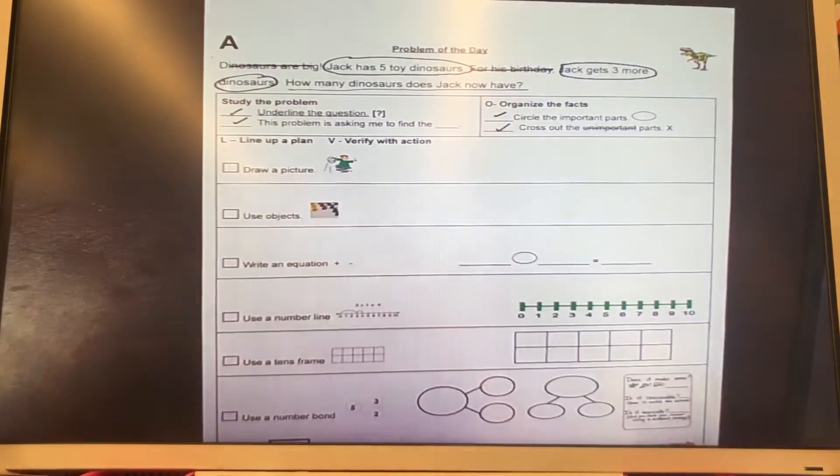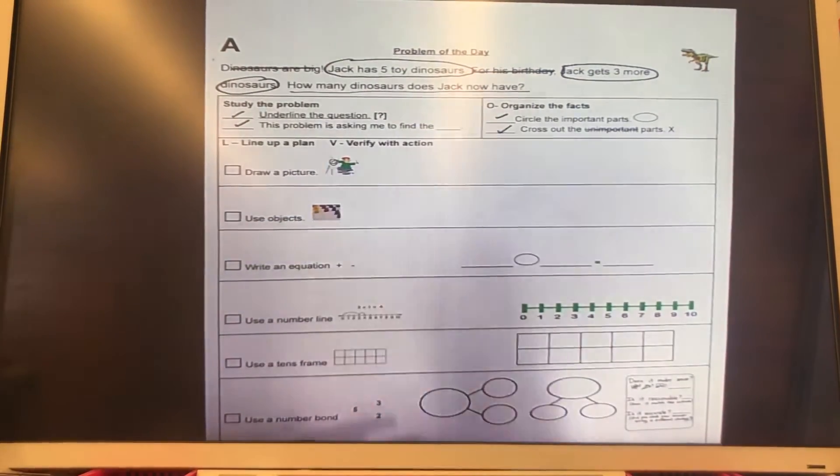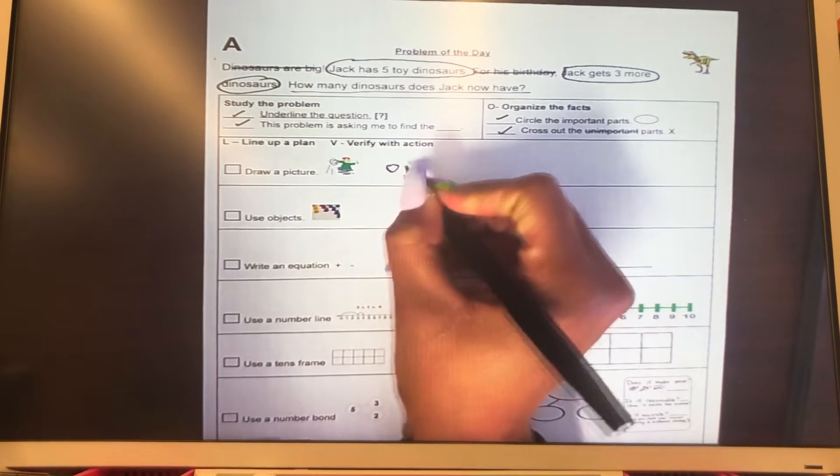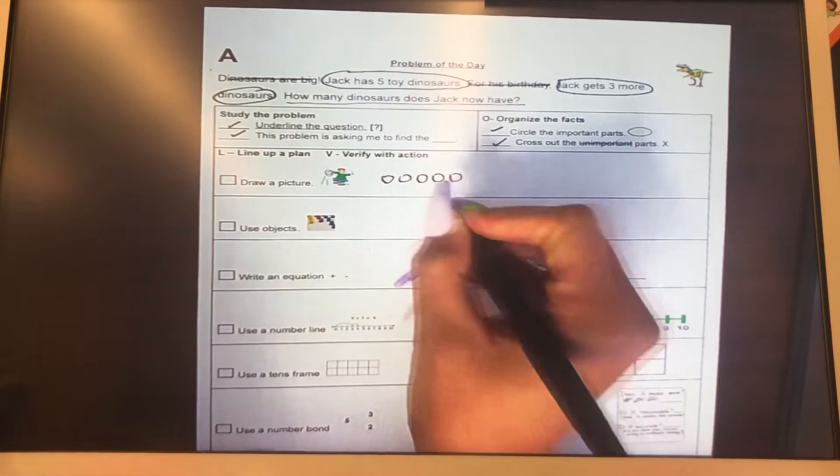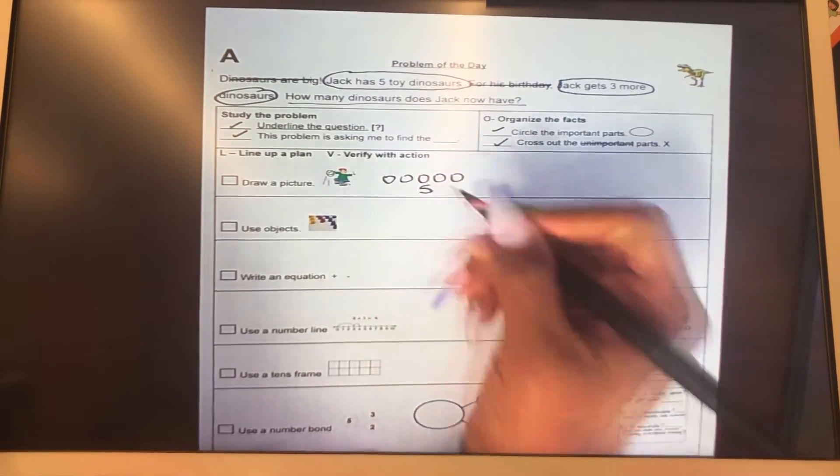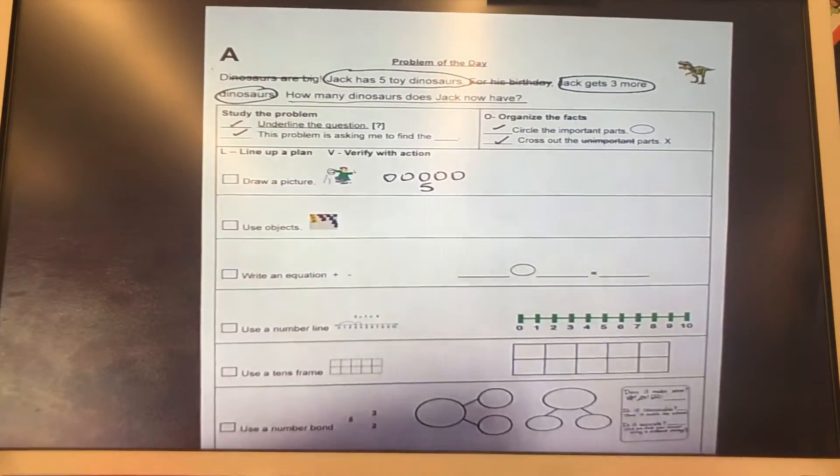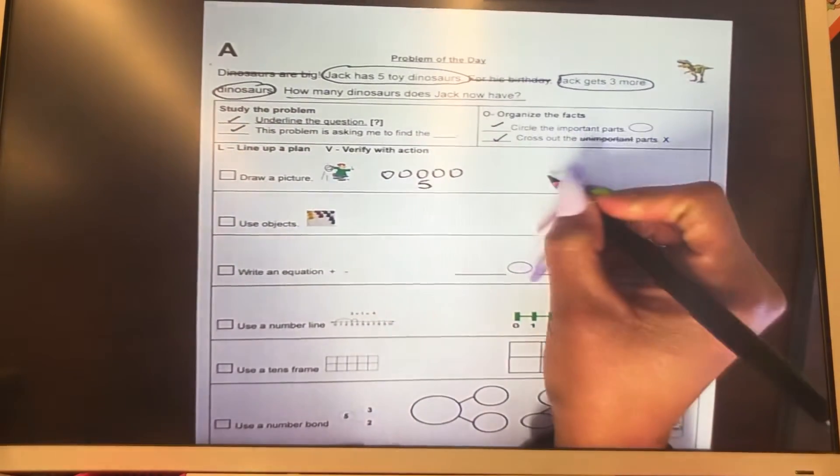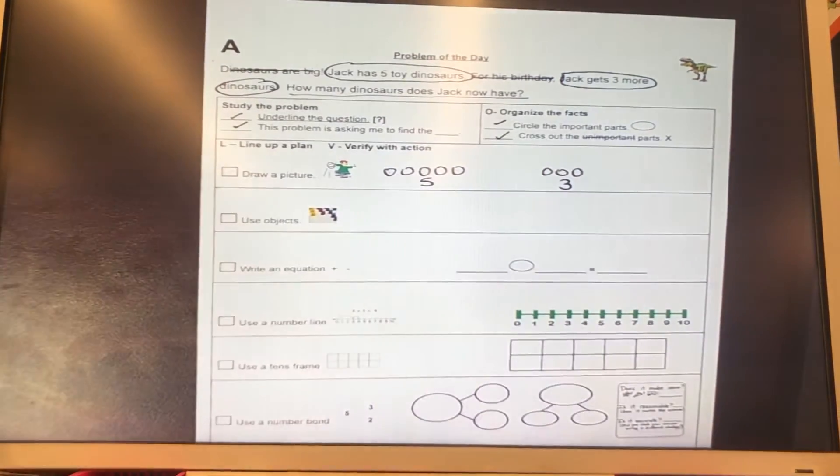So let's draw a picture of five toy dinosaurs. I'm going to draw circles because I cannot draw dinosaurs. So one, two, three, four, five. Remember to put your numbers so you don't get confused. And then you got three more. So we need to draw three more. One, two, three. Write on number three.